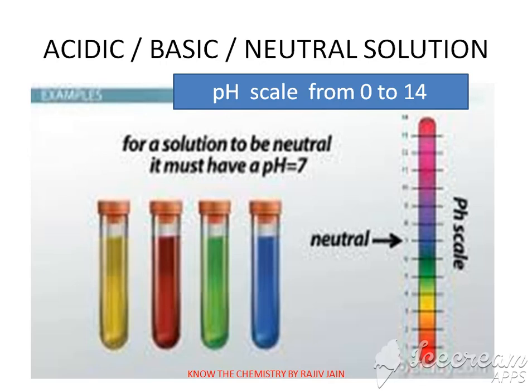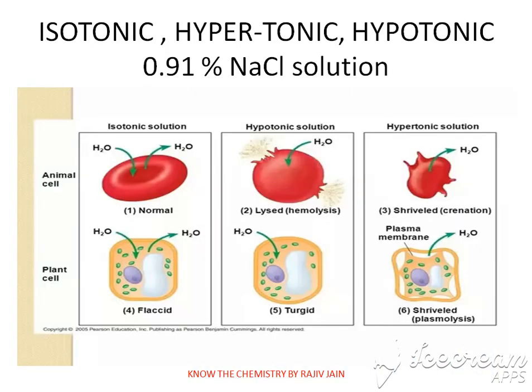Dilute or concentrated solutions are self-explanatory. For acidic, basic, or neutral solutions: pH less than 7 is acidic, equal to 7 is neutral, and greater than 7 is alkaline. For isotonic, hypertonic, and hypotonic solutions: if the osmotic pressure is more it is hypertonic, if the same it is isotonic, and if less it is hypotonic. Hyper means high.